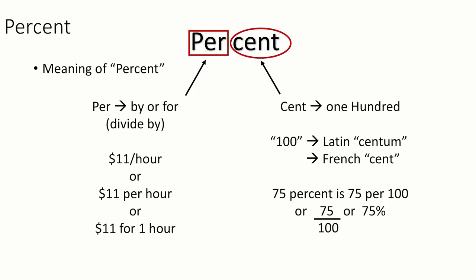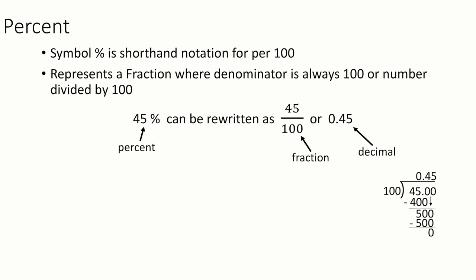So 75% is 75 per 100. A percent always has a symbol, which you've probably seen before - that's the percent sign. It has the slash with two circles top and bottom. A percent always represents a fraction where the denominator is always 100. So 45% can be written as 45 over 100, or the decimal 0.45.